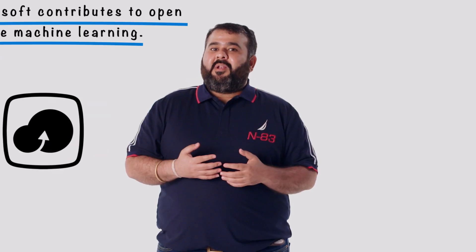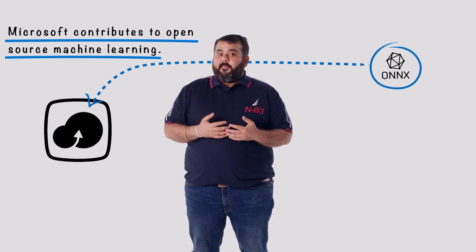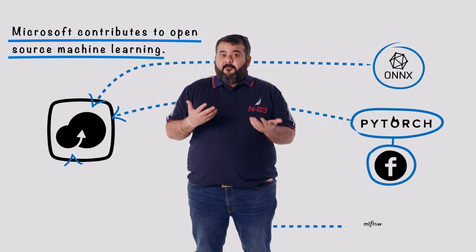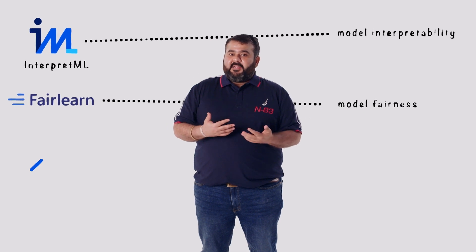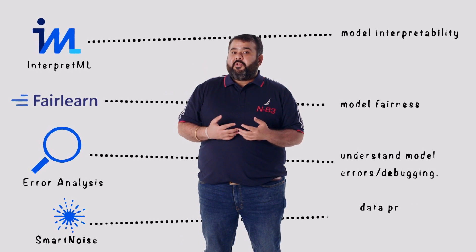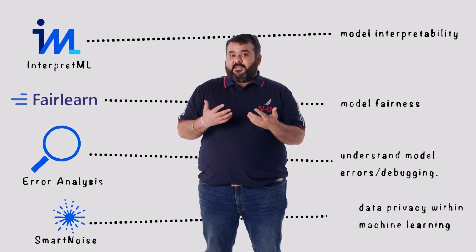We saw how Azure Machine Learning brings the best of open source to data scientists. Now let's see how Microsoft is also a good citizen of the open source community and how it leads and contributes back to it effectively. Microsoft leads many open source projects in the community like ONNX, including the ONNX Runtime for model portability across frameworks and accelerated inferencing, PyTorch in collaboration with Facebook, MLflow alongside Databricks, and many more. Microsoft has also open sourced all its responsible machine learning toolkits for the community to utilize and further contribute — toolkits like InterpretML for model interpretability, FairLearn for model fairness, and error analysis to understand model errors and debugging. It also open sourced a differential privacy toolkit called SmartNoise, built in collaboration with Harvard Labs to advance data privacy within machine learning.